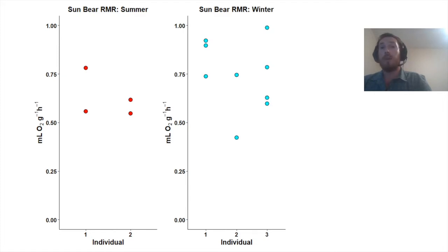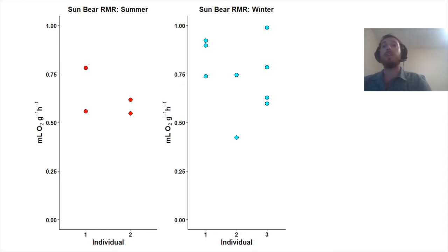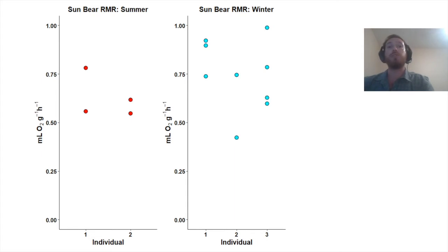For comparison, here is the same figure but collected during the winter. Individual 1 and 2 are the same bears from the summer figure, and individual 3 is a new bear. Comparing individual 1 and 2, we can see that individual 1 has a slightly higher resting metabolic rate in the winter than summer, and individual 2 has a bit more variation in the winter. However, if you take the mean of these values, they do line up pretty well.